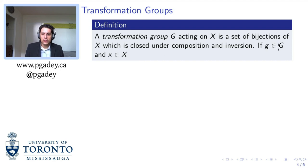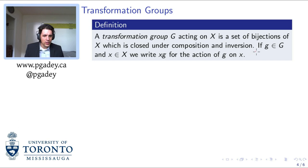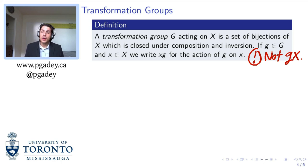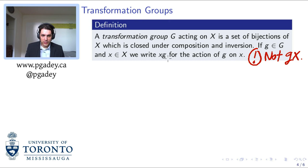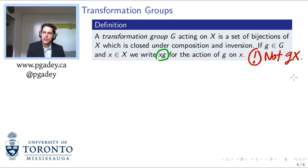If we have an element of our transformation group and an element of our space, we write xG for the action of G on x. Note that this is not written as Gx in this course. In Math 301 you might have seen the notation Gx, or some textbooks use Gx. However, our textbook uses the notation with G on the right-hand side. Just be careful when reading other sources.